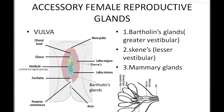Bartholin's glands secrete mucus to keep the vestibular region moist. Another pair of accessory glands present below the urethral orifice are known as Skene's glands, or the lesser vestibular glands. These glands also secrete mucus.